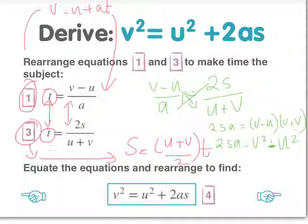Just bring that last term over here, u squared plus 2sa equals v squared. And that's your last formula.